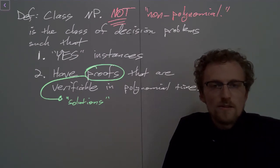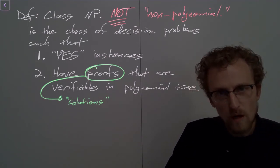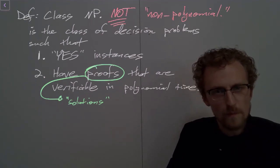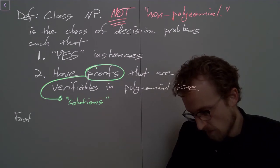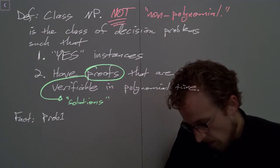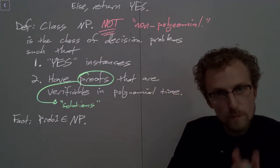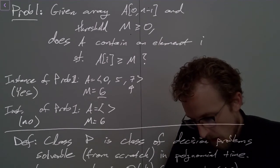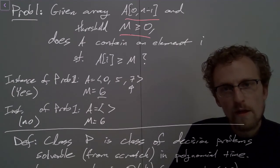One thing to notice is that Prob 1 is in NP. The very first example of an NP problem I want to give you is a problem that also happens to be in P. And so this suggests something about the relationship between the class P and the class NP. Prob 1 — the problem we defined earlier — is in NP. What is Prob 1? Given an array A and a threshold M, does that array contain an element that is greater than or equal to M?